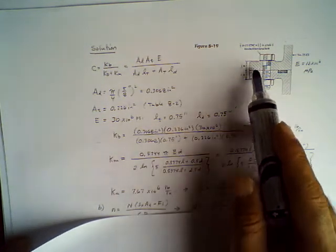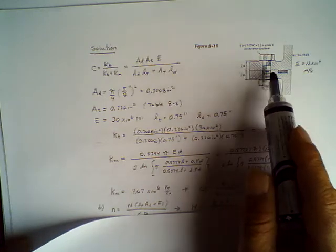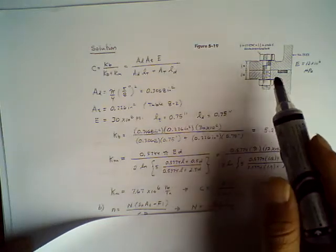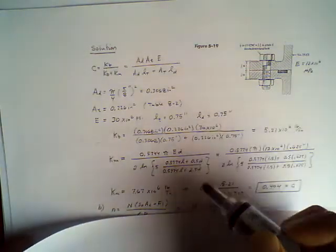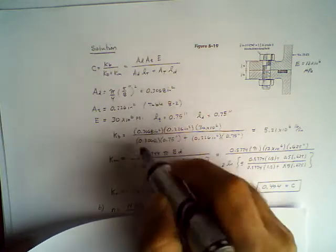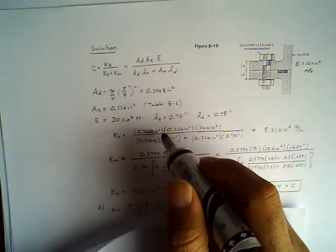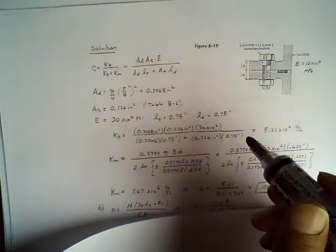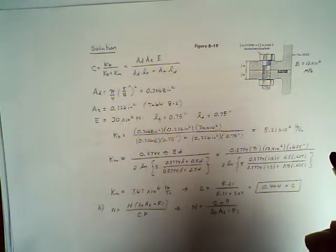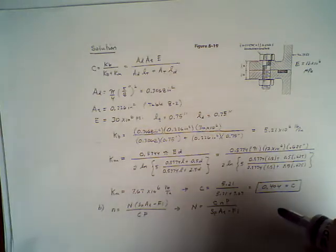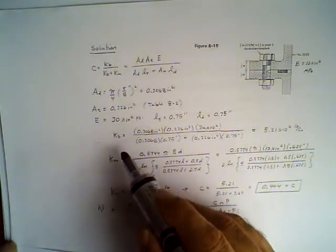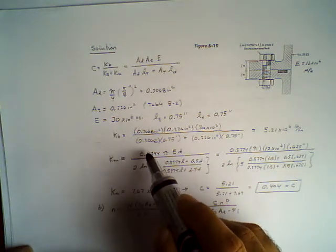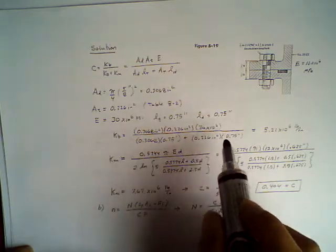Modulus of elasticity for steel is 30 times 10^6 psi. It's actually given to you here, 30 times 10^6, this is your E. The length of the grip - in this case they give us in this diagram it's half and half, so 0.75 is the length of the threaded portion and 0.75 is the length of the non-threaded portion. So I can find kb.